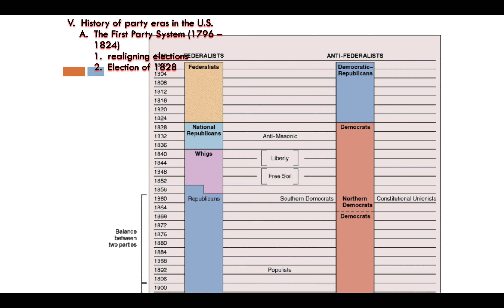That caused a realignment — a break in the Democratic-Republican Party. You can see in the graphic that the Democratic-Republicans are going to split and eventually just become the Democrats. The two guys who ran for president in 1824 are running again in 1828: John Quincy Adams and Andrew Jackson. Both happen to be Democratic-Republicans, but they're very different Democratic-Republicans.